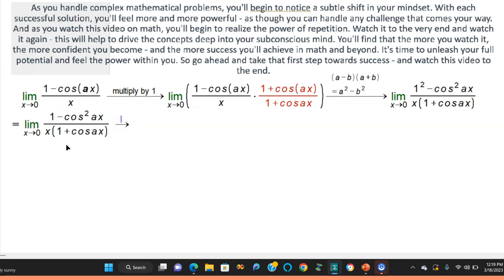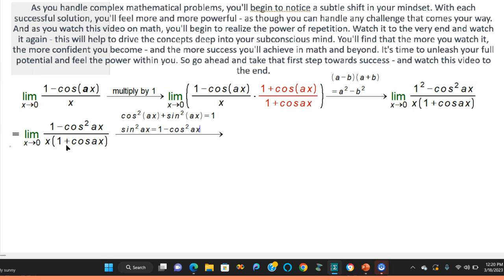Now we're going to use the Pythagorean identity. You should have learned something like cosine squared ax plus sine squared ax equals 1. When you solve this for sine squared, sine squared ax is equal to 1 minus cosine squared ax. We can use that here because we have that in the numerator.